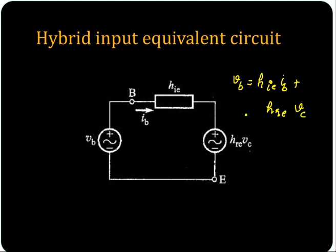How will you draw the input equivalent circuit? This is simple Kirchhoff's voltage law. Here you see VB as a voltage source. This is the base terminal and this is the emitter terminal. So here you are representing this as HIE.